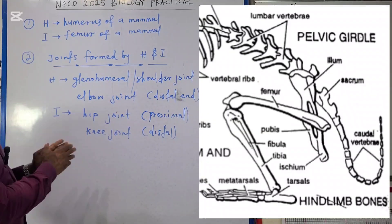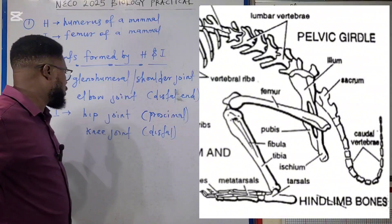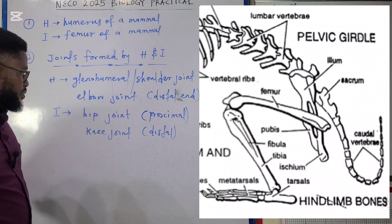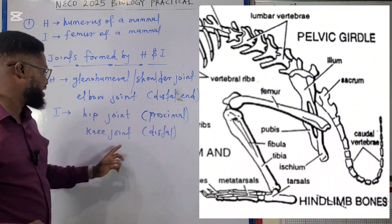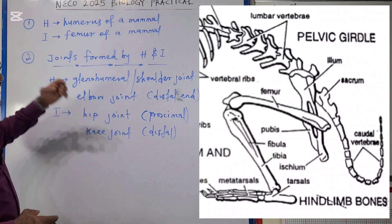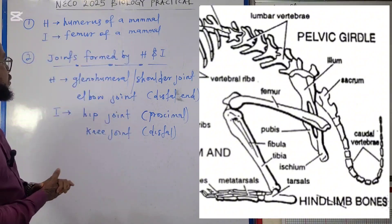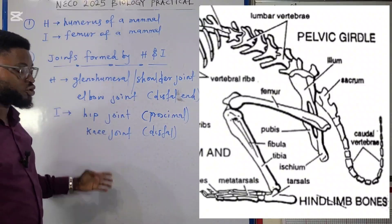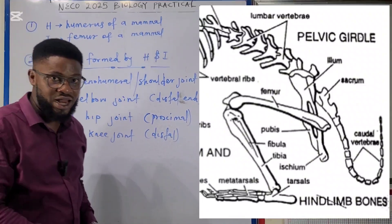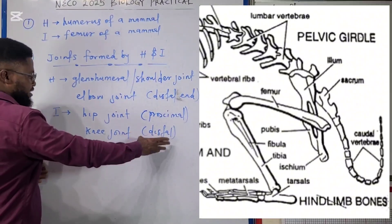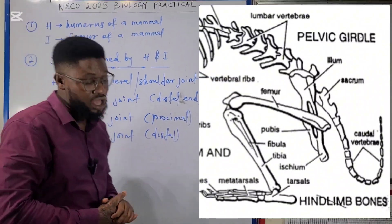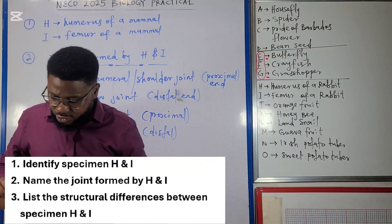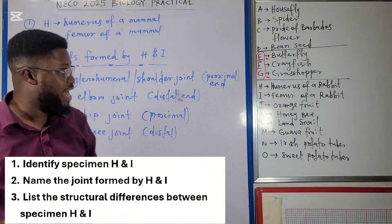For specimen I, the femur (thigh bone), proximally it forms a hip joint, which is a type of ball-and-socket joint. Distally, the femur links with the tibia and fibula of the lower limb, forming the knee joint. That answers questions 1 and 2. Question 3 asks us to list structural differences between specimens H and I.